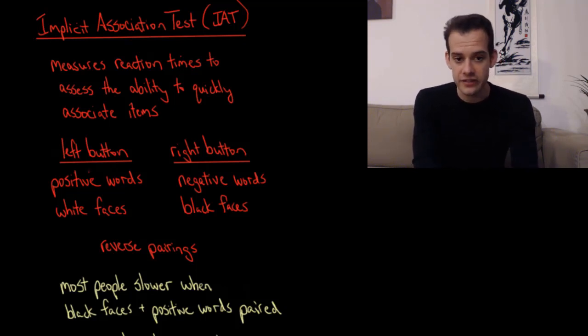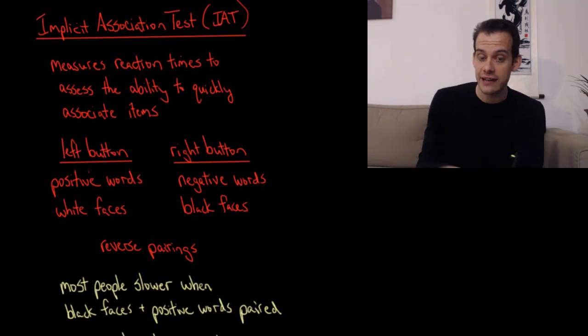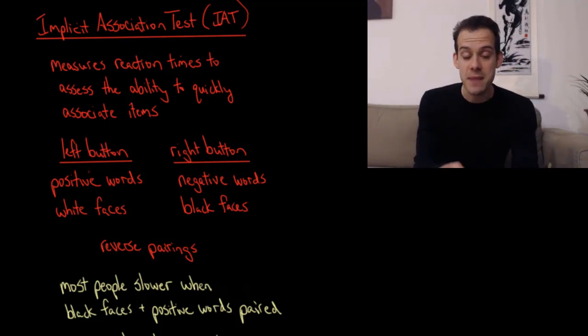So the sort of standard version of this is you have the left button and the right button, which you press with your left and right hand, and a certain association will be put to the left button. So for instance, you're going to see a stimulus, like a positive word, or a white face. If you see either of those things, you press the left button. If, however, you see a negative word, you press the right button. Or if you see a black face, you press the right button. So it's associating positive words and white faces, and negative words and black faces, and it's measuring how quickly you can do this. It's measuring your response time.